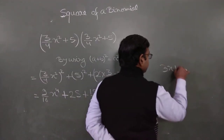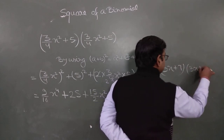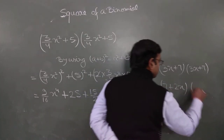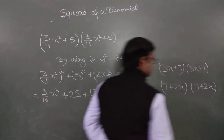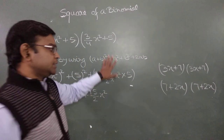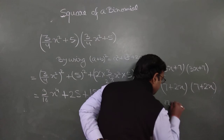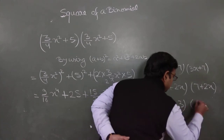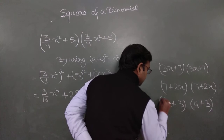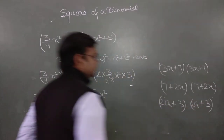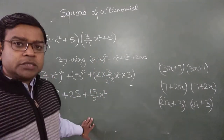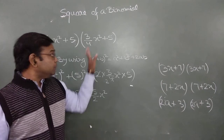You can similarly solve questions like (3x + 7)(3x + 7), or (7 + 2x)(7 + 2x), or (a + 3)(a + 3). Identify the first term and the second term, and apply the identity. Try to solve all these questions and the practice questions given in your exercise by yourself.